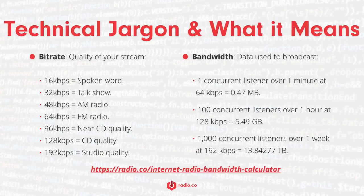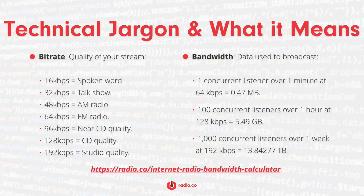Lower bit rates like 64 kilobits per second are useful for listeners with slow Wi-Fi or cellular speeds on mobile, so your shows get delivered without interruption. Bandwidth, on the other hand, is the amount of data used to broadcast online to listeners. The quantity of bandwidth used depends on your bitrate and the number of listeners you have. For example, if you have 100 listeners staying tuned in for over an hour at 128 kilobits per second, that's roughly 5.49 gigabytes of bandwidth. You can estimate how much bandwidth you might use by heading to the link shown on screen.